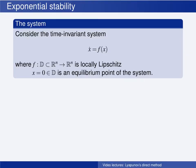You have learned how to use Lyapunov's direct method to prove stability and local or global asymptotic stability of an equilibrium point. We also have a Lyapunov theorem for exponential stability. We still consider the same system as before — the system described by a time-invariant ordinary differential equation, where the function f is defined on some domain d in the state space, which contains the origin, which is the equilibrium point of interest.